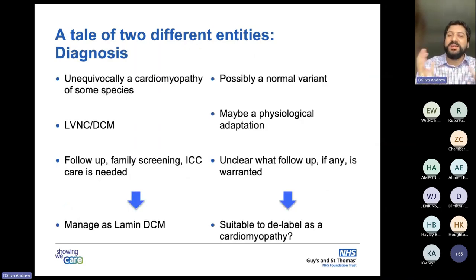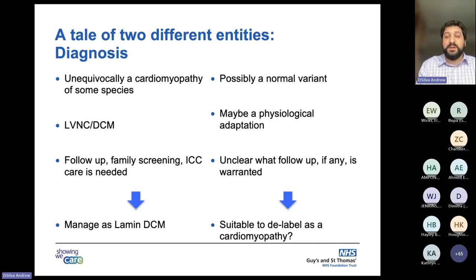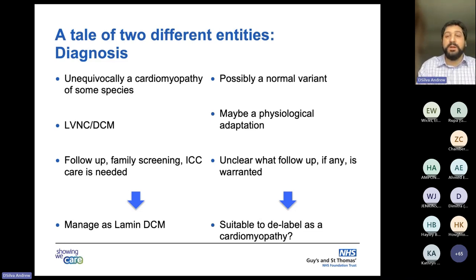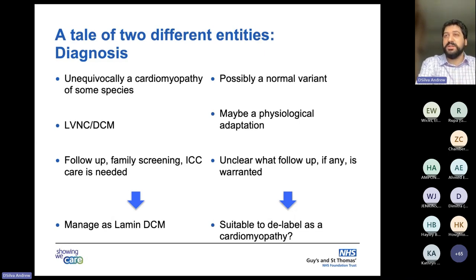The 35-year-old woman on the left unequivocally has a cardiomyopathy. What you call it and how you integrate the trabeculation into the description probably doesn't matter — she's managed as an LMNA DCM, needs inherited cardiac conditions care and follow-up, family screening, and ultimately has an ICD implanted. The 40-year-old man on the right may be a normal variant. The family history may become relevant over follow-up, or it may not. Some of the changes we see perhaps reflect just physiological adaptation to exercise. Maybe it's suitable to delabel him, as there isn't sufficient evidence he bears a cardiomyopathy — though there is some ambiguity and it's useful to look deeply at the phenotype.